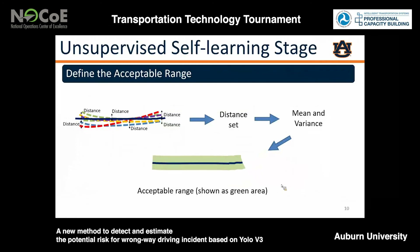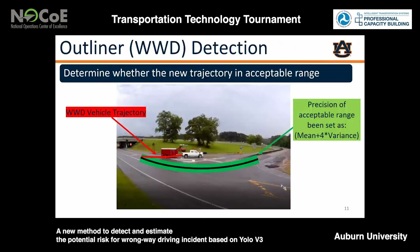For each cluster, based on the distributions of distance, we can calculate an acceptable range to determine the behavior of the driving. To make it easy, we extract one representative trajectory and one incoming trajectory. You can see in the picture, the red line is not in the acceptable range of the black line, so the red line is considered as abnormal driving behavior.